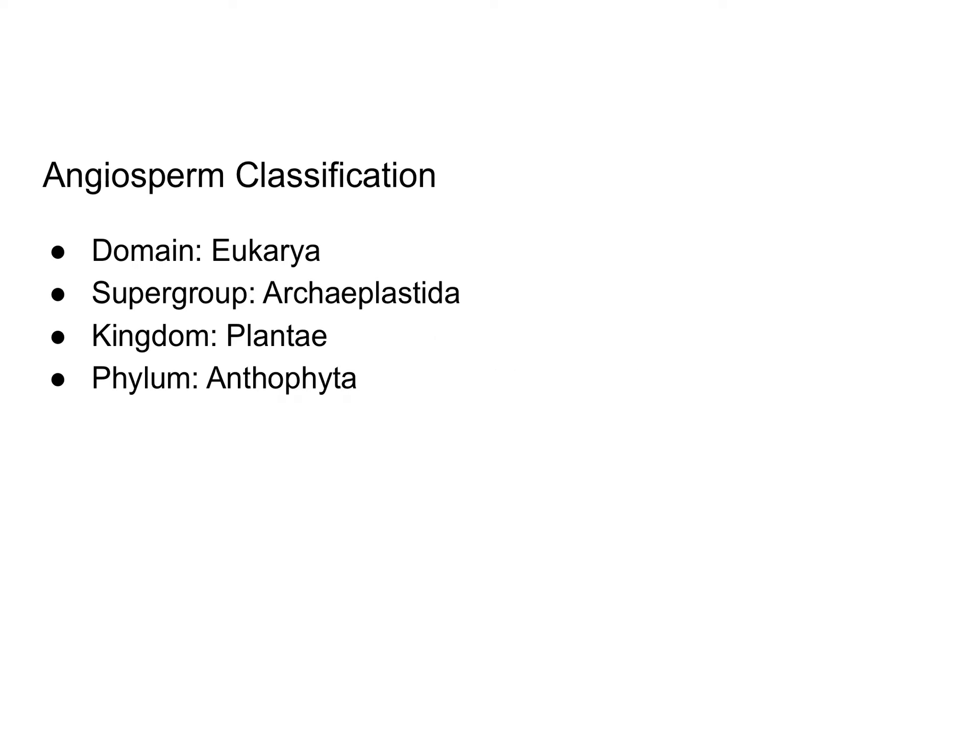In this video, we're going to talk more about angiosperm diversity — some of the different kinds of angiosperms that exist. So first, let's take a look at the classification of angiosperms. They are in domain Eukarya, which just means that they are made of eukaryotic cells.